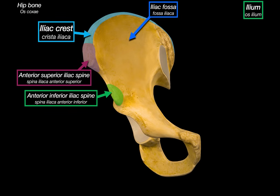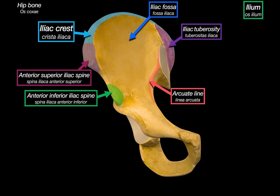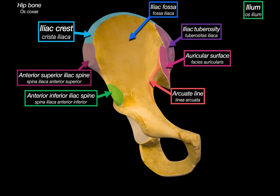Following along the inner surface, there's a curved bony ridge known as the arcuate line, which marks the boundary between the ala and the body of the ilium and forms part of the pelvic brim. Just behind this area is the iliac tuberosity — a roughened patch of bone where the strong ligaments of the sacroiliac joint attach. Directly below is the auricular surface, shaped like an ear, which is the actual articular surface that connects with the sacrum.